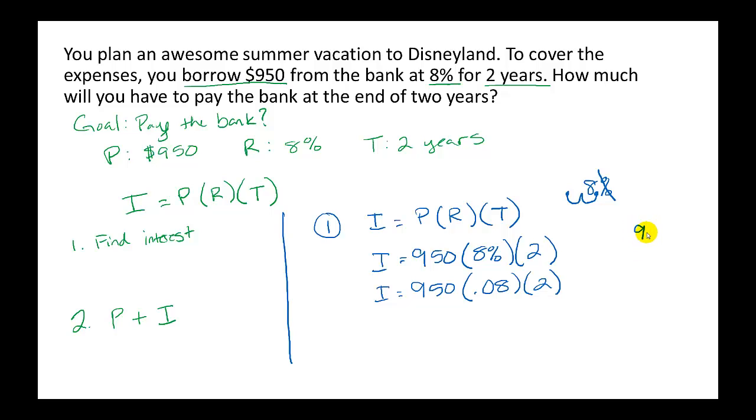So we have 950 times .08. We're finding 8% of 950. This is part of a number. 0, 0, 0, 4. 72 plus 4 more is 76.